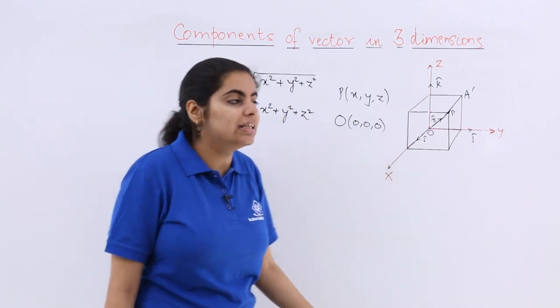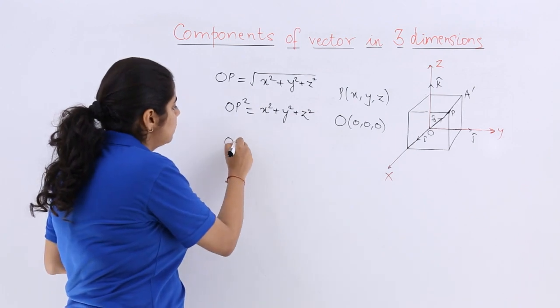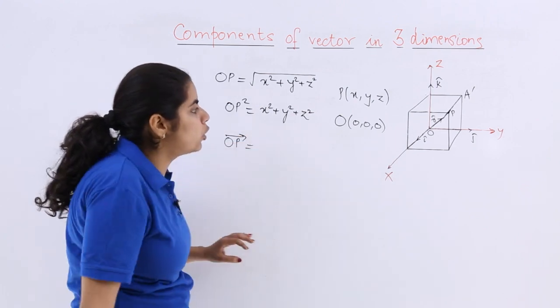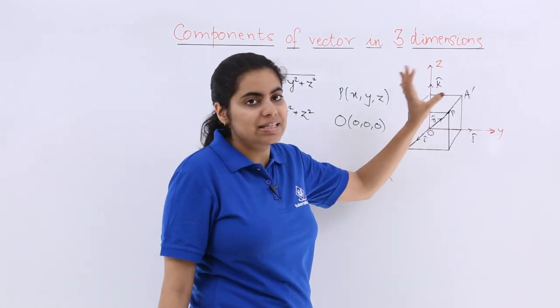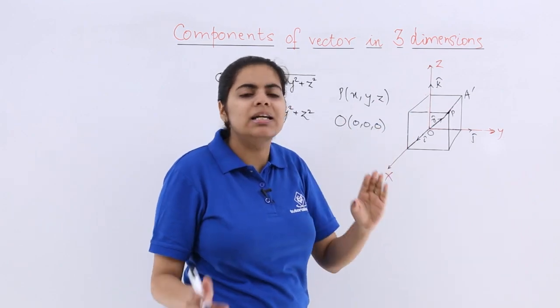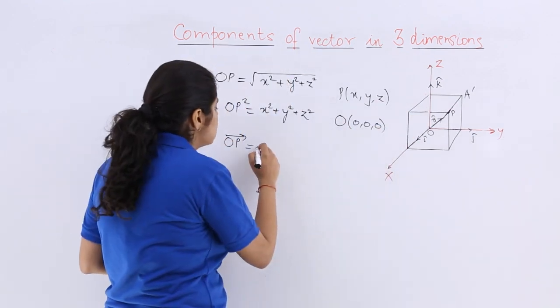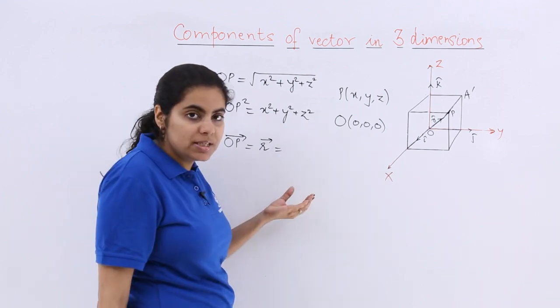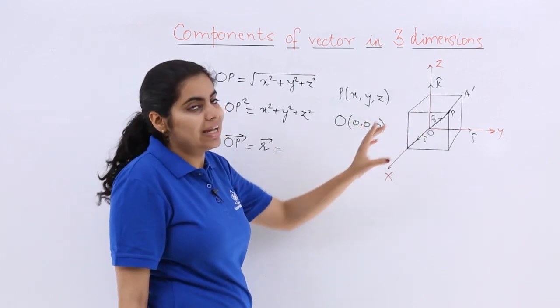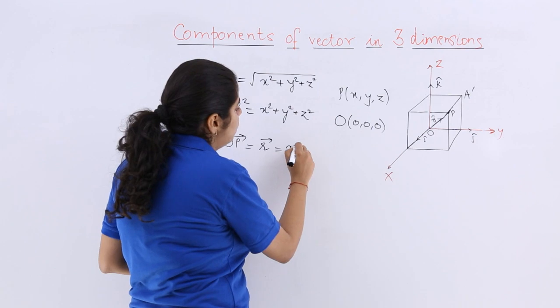Now what is OP vector? OP vector is actually the resultant obtained with these three axes, and this vector is something which can be named as r vector, and it will have the components of all the three axes. That means the x component, the y axis component, plus the z axis component.